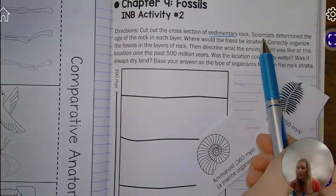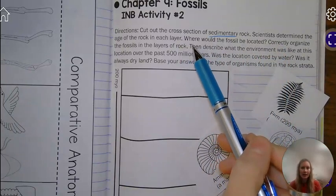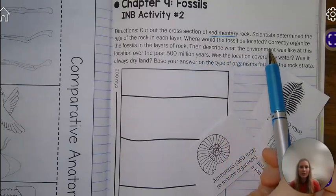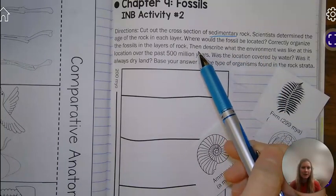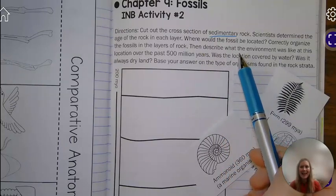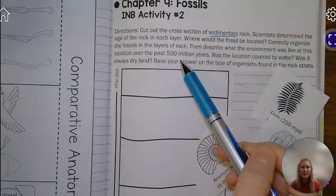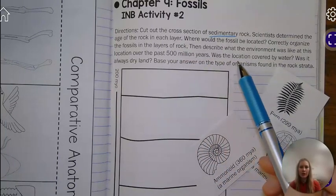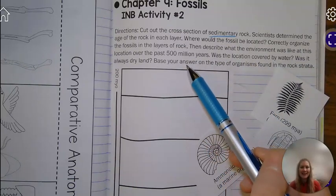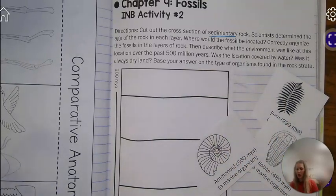Okay, so scientists determined the age of the rock in each layer. Where would the fossil be located? We need to correctly organize the fossils in the layer of rock and then describe what the environment was like at this location over the past 500 million years. Was the location covered by water? Was it always dry land? We're going to base our answer on the type of organism found in the rock strata.